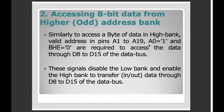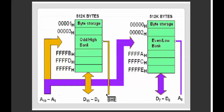If A0 = 1, I will work with the higher bit. If A0 = 1 and BHE = 0, then I work with D8 to D15. If I study the lower bit with A0 = 0, we do the lower byte. The combination of A0 and BHE determines whether D0-D7 or D8-D15 is active.